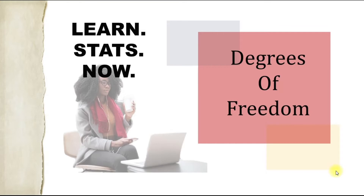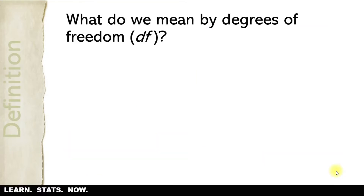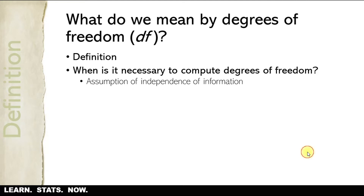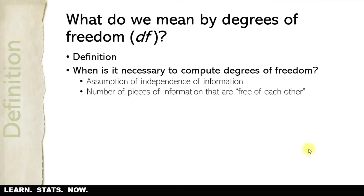In this video we're going to talk about degrees of freedom. Degrees of freedom simply means the number of observations in a sample that are free to vary. It is necessary to compute degrees of freedom when we assume that information is independent in our sample — meaning we cannot deduce the value of one observation from any of the other observations or pieces of information in the sample. So degrees of freedom refers to the number of pieces of information that are free of each other.